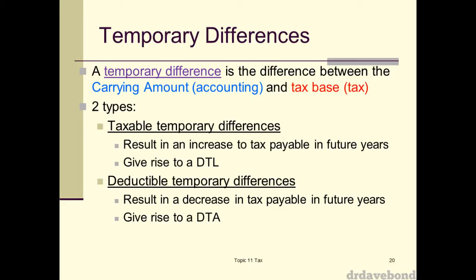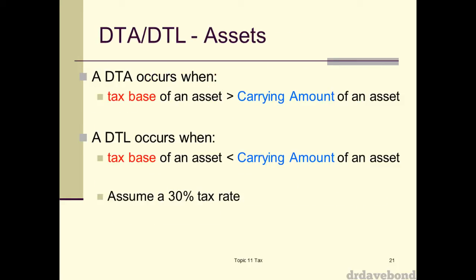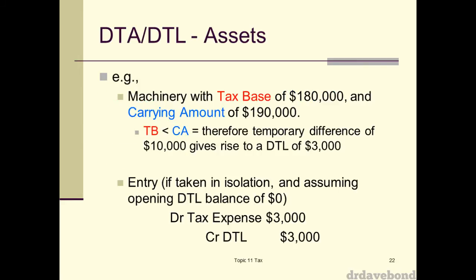The more formal approach for assets is: compare the tax base to the carrying amount. If the tax base is greater than the carrying amount of the asset, you've got a DTA. If the tax base of an asset is less than the carrying amount of the asset, you've got a DTL. I'm going to go back to the document camera to draw this up.